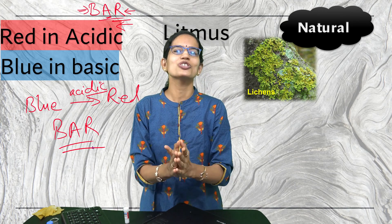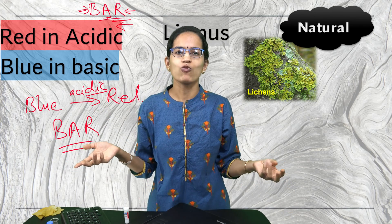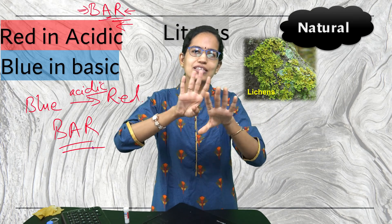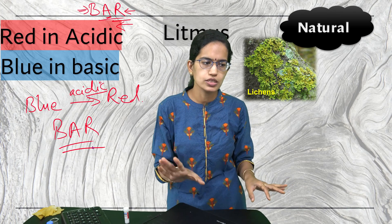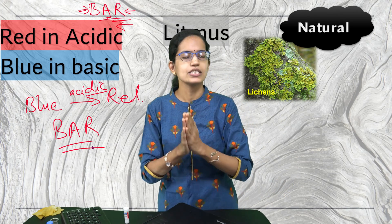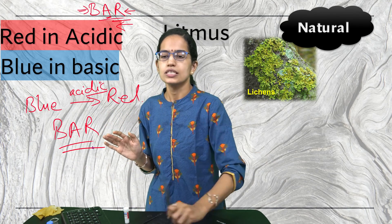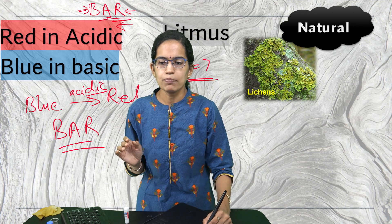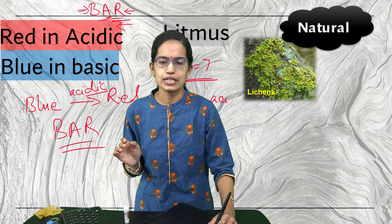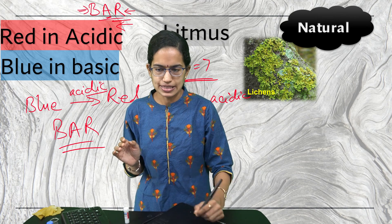If the solution is neither acidic nor basic — for example, if you drop litmus in water — there would be no change in color. We call these neutral solutions. Their pH is 7. If the pH is less than 7 it is acidic, and if the pH is more than 7 it is basic.